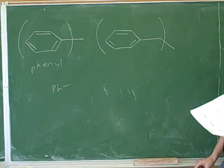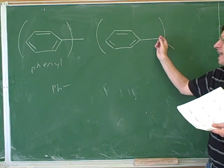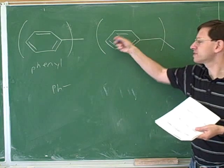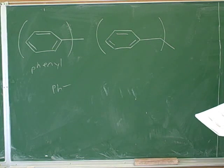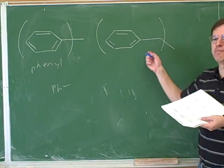However, a different situation is when you have a benzene and then a CH2 group as a substituent. First the benzene and then a CH2 group as a substituent. Now it turns out that there's a name for that as well. This is called benzyl.